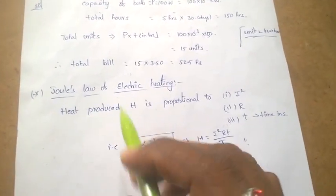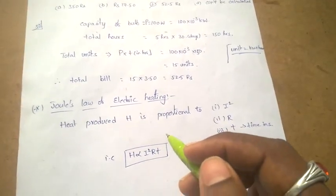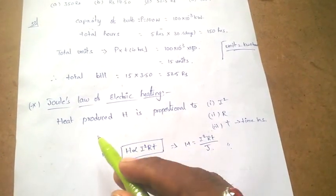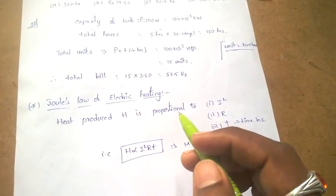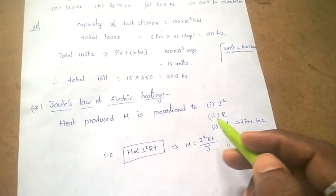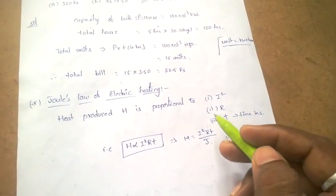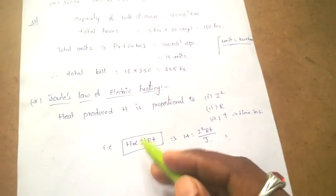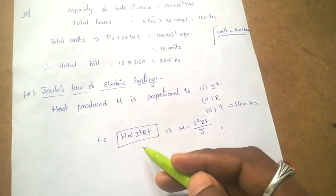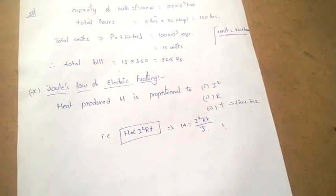The last topic is Joule's law of electric heating. Heat produced is proportional to current squared, proportional to resistance, and proportional to time. The simplified form is H proportional to I-squared RT. Thank you friends.